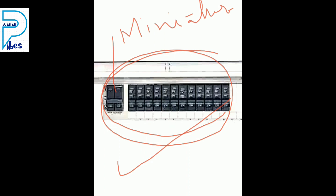In India, AC changes its direction every 1/100th of a second. The frequency of AC is 50 Hz. Due to alternating current, if high voltage enters the houses, or due to overloading, a short circuit may happen. We can prevent that with a fuse.